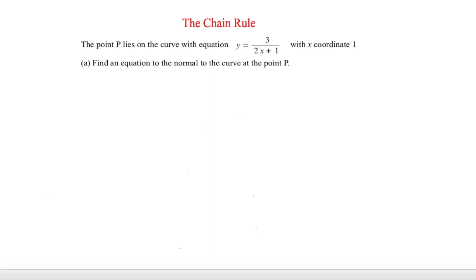The final question is a problem-solving question. It says point P lies on the curve y equals 3 over (2x plus 1), with x-coordinate 1. We need to find the equation of the normal to the curve at point P. First, let's find y: substituting x equals 1 gives y equals 3 over 3, which equals 1. So the coordinates of P are (1, 1).